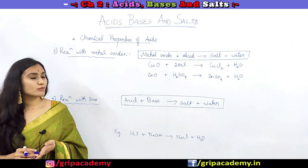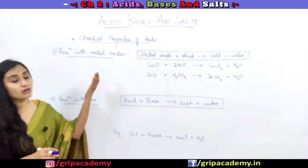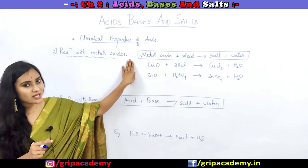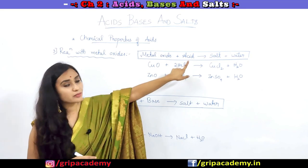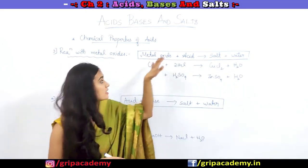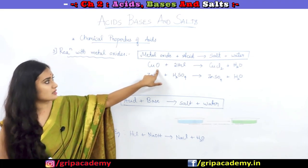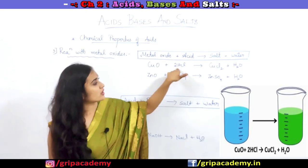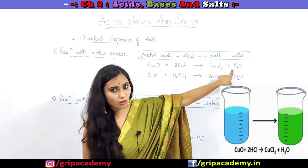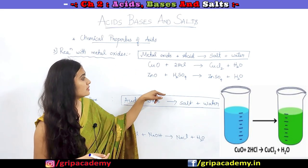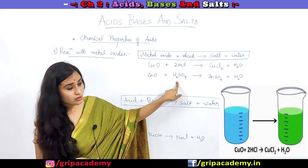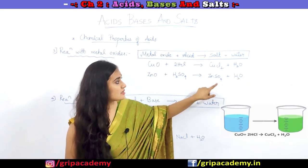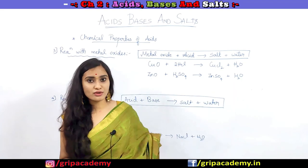Now let us understand the other chemical property: what happens when metal oxides react with acids. When metal oxides react with an acid, they produce salt and water. For example, copper oxide (an oxide of copper) when it reacts with HCl, it produces copper chloride along with the formation of water. Also, when ZnO reacts with H2SO4, it produces zinc sulfate (which is the salt) along with the formation of water.